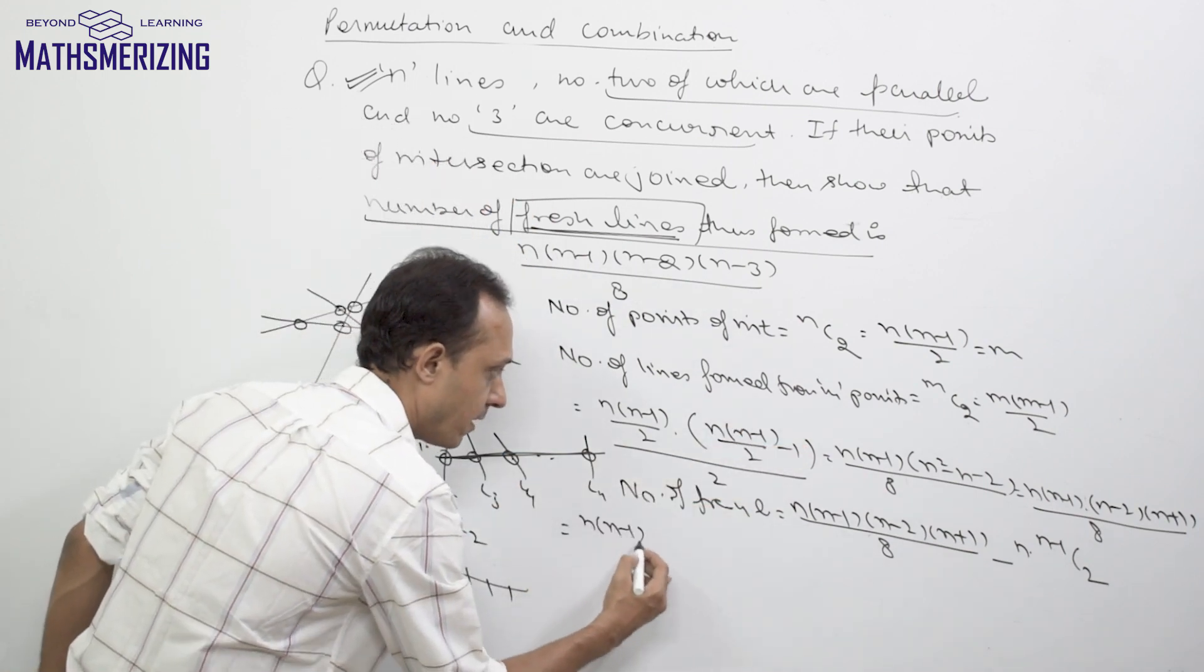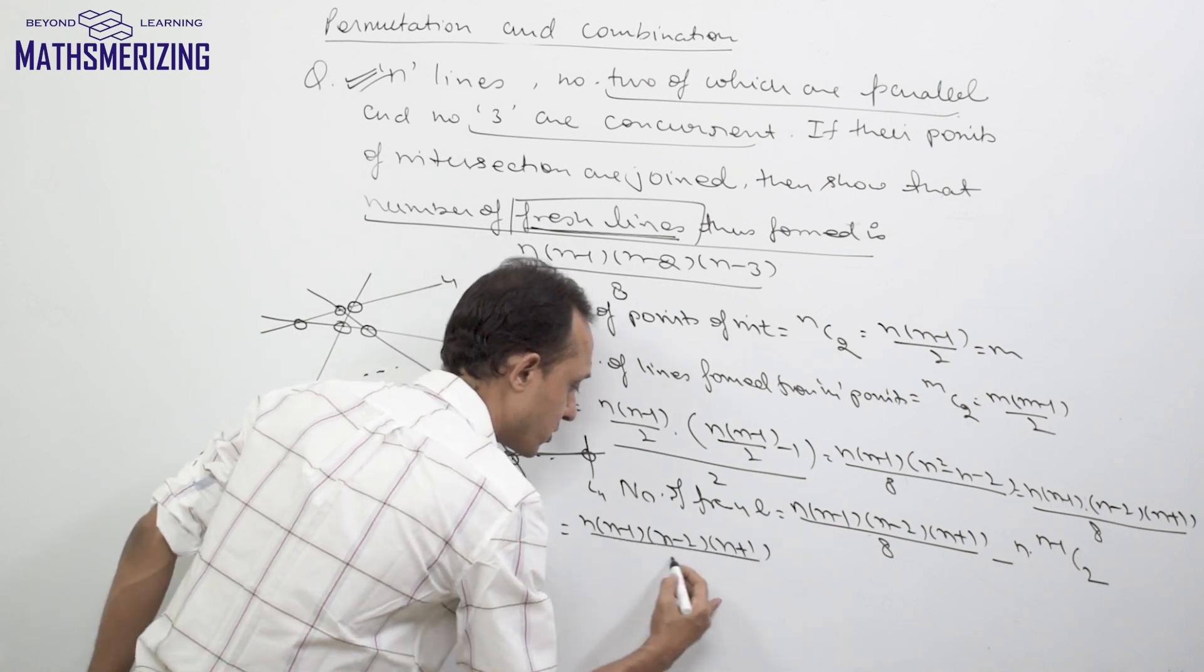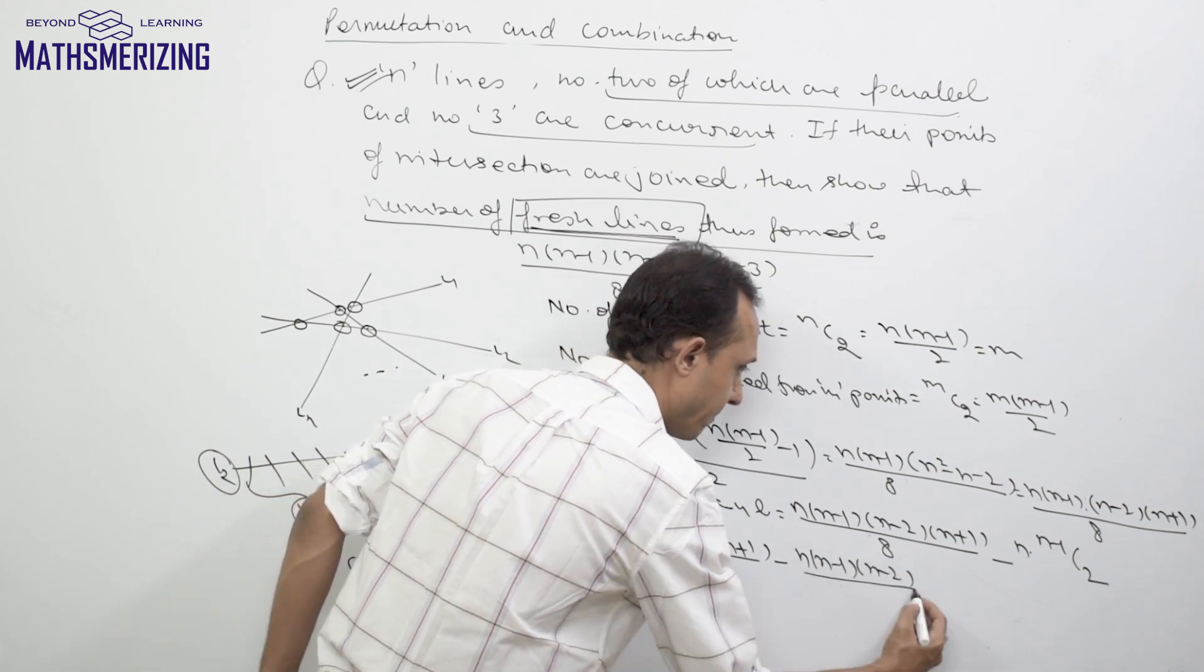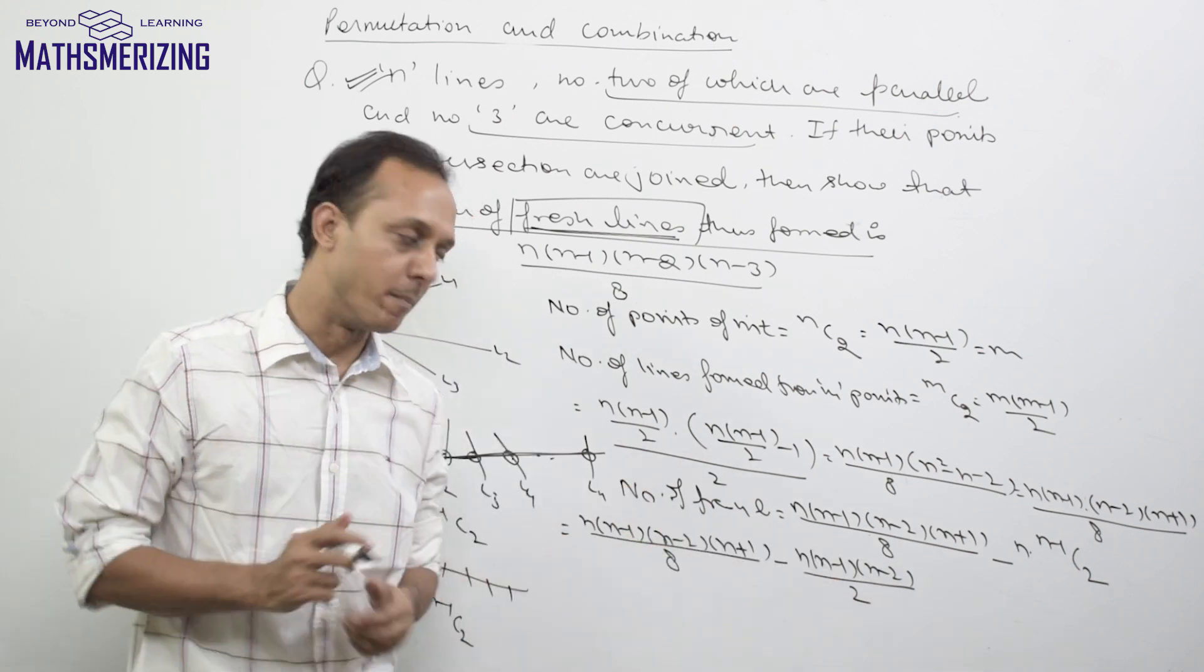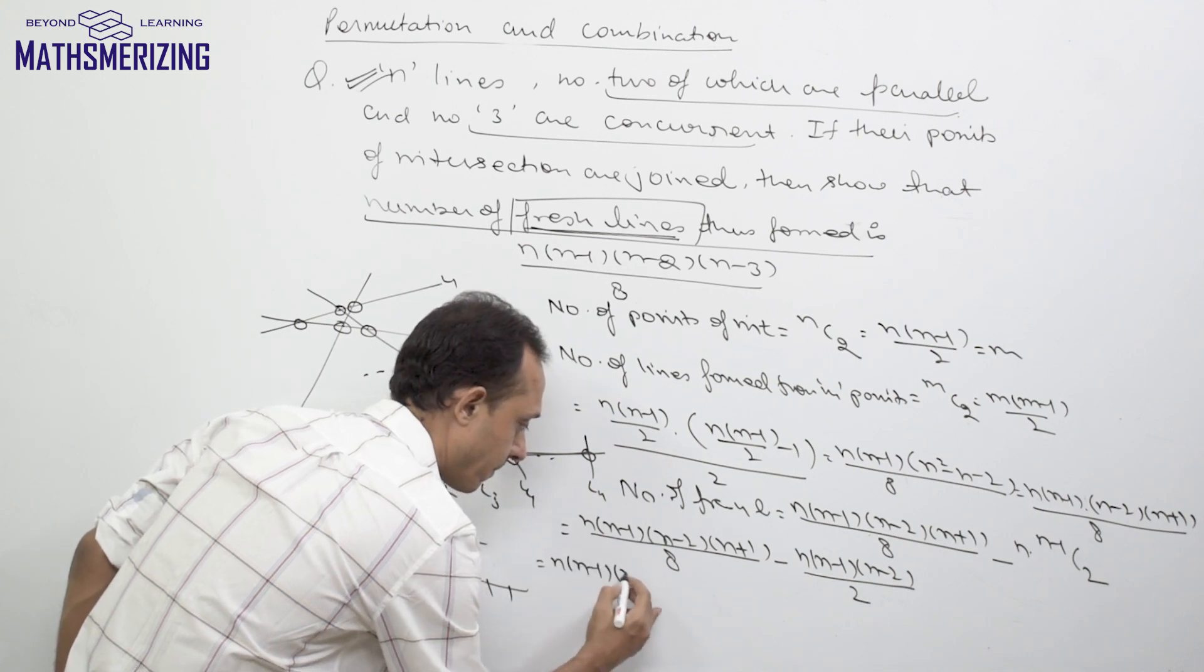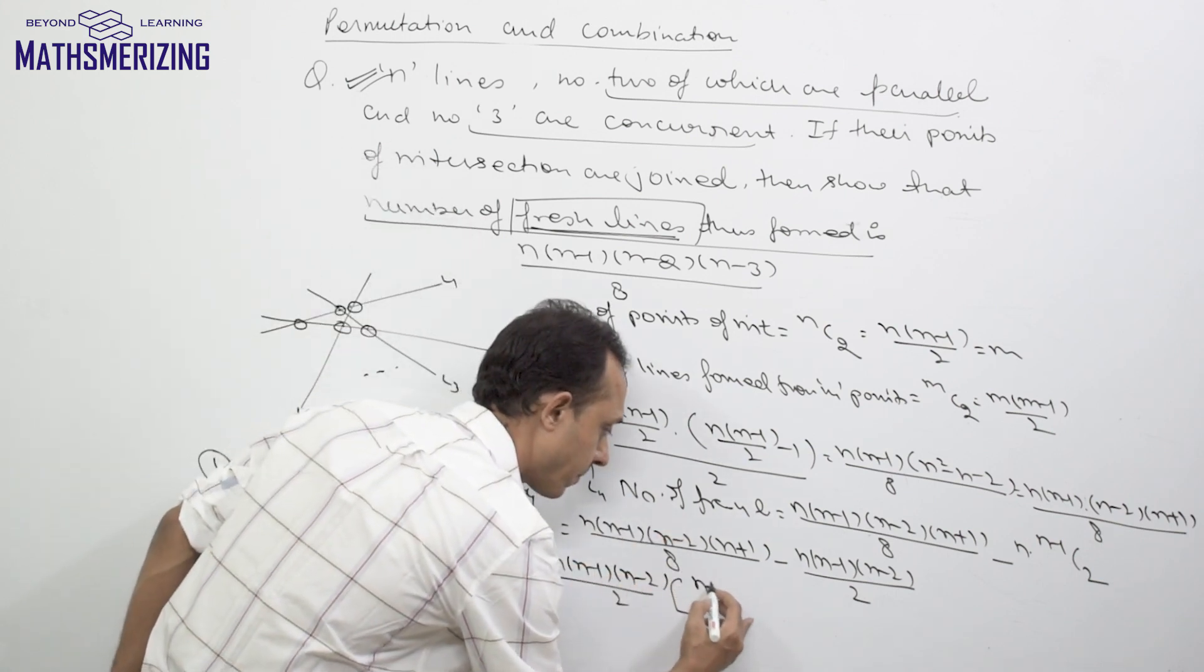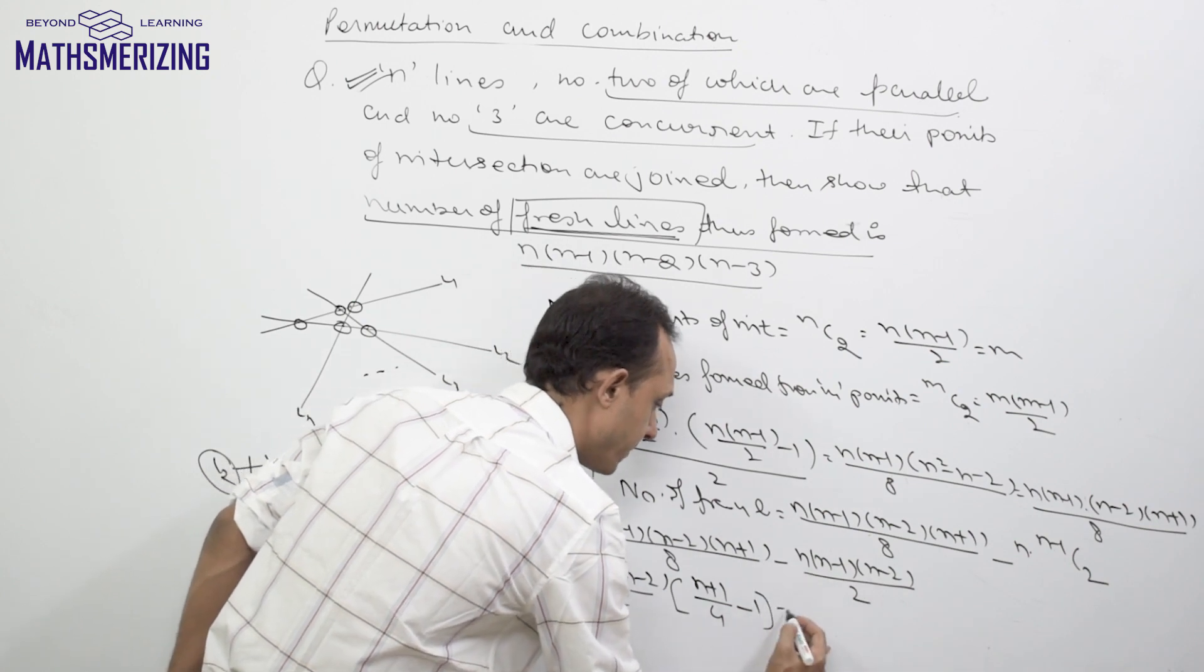If I simplify, I will write it as n(n-1)(n-2)(n+1)/8 minus n(n-1)(n-2)/2. Now here I will take n(n-1)(n-2)/2 common. If I take it common, then I am left with (n+1)/4 and here it will be 1.